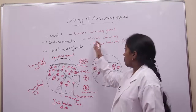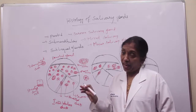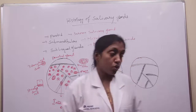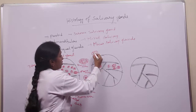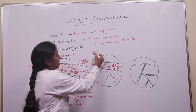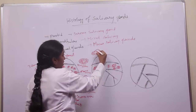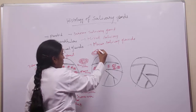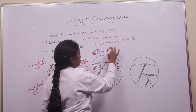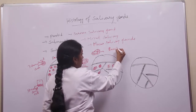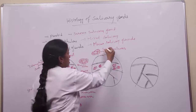The important characteristic feature of the mixed salivary gland — the submandibular gland — is serous demilunes. Serous demilunes means the mucous acini are capped by serous acini. So the mucous acini consist of cuboidal cells with a flat nucleus situated at the base, and the mucous acini are capped by serous acini — we call this as serous demilunes.